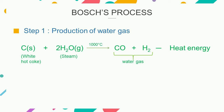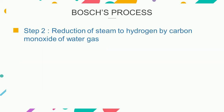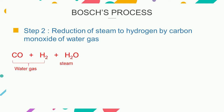The second step of this process is the reduction of steam to hydrogen by the carbon monoxide of water gas. The water gas formed in the first step is mixed with an excess of steam. This mixture is then passed over heated ferric oxide, which acts as a catalyst, and chromic oxide, which acts as a promoter.